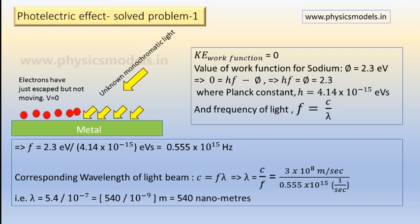So hf is equal to 2.3. Then plug in h equal to 4.14 into 10 to the power minus 15 electron volts second and therefore frequency will be 2.3 divided by the Planck constant and that will work out as 0.555 into 10 to the power 15 hertz.